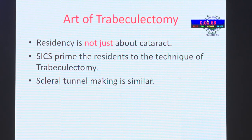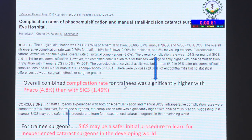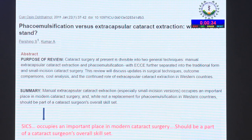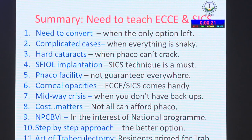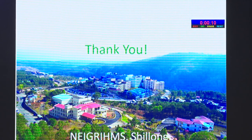Residency is not just about cataract - SACS primes residents for trabeculectomy technique as clear corneal incision-making is similar. Studies from Aravind Eye Hospital found that overall complications in FACO are much higher than SACS, and recommended SACS as a safer initial procedure for inexperienced cataract surgeons in the developing world. A review study also stated SACS or ECCE occupies an important place in modern cataract surgery and should be part of every cataract surgeon's overall skill set.